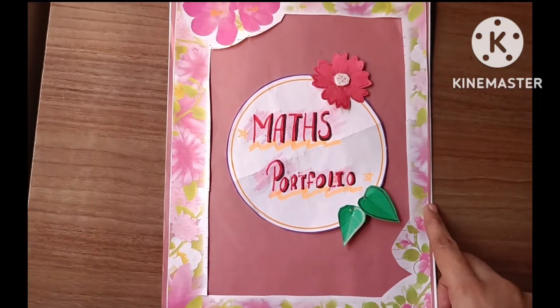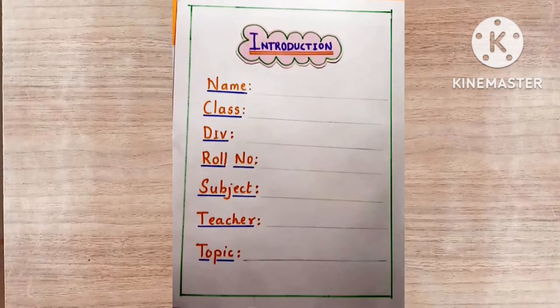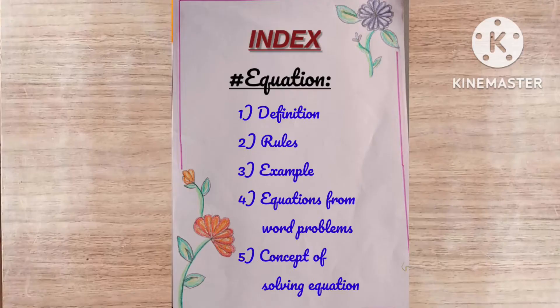This is how I made the project. Now let's see the inside pages. The next page is the introduction — name, class, division, role number, subject, teacher, and topic. The next page is the index: equation number one — definition, number two — rules, number three — example, number four — equation from word problem, number five — concept of solving equation.